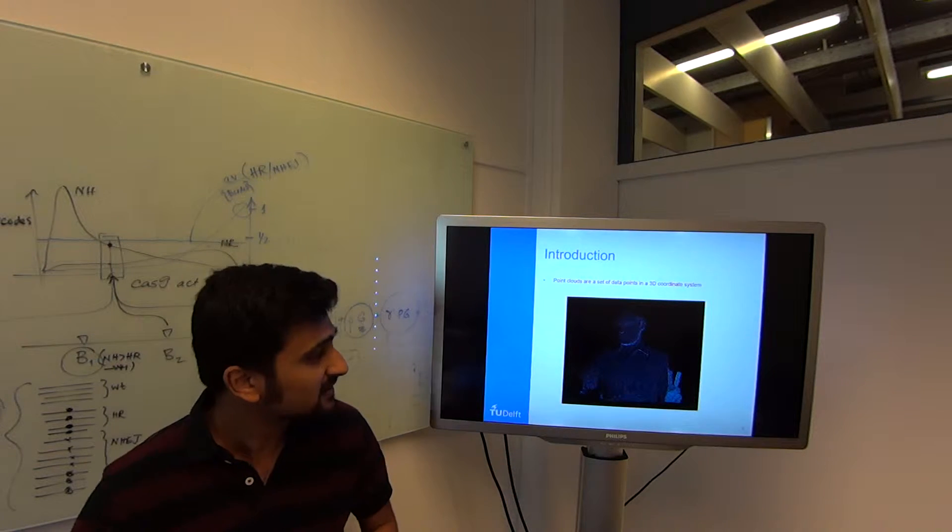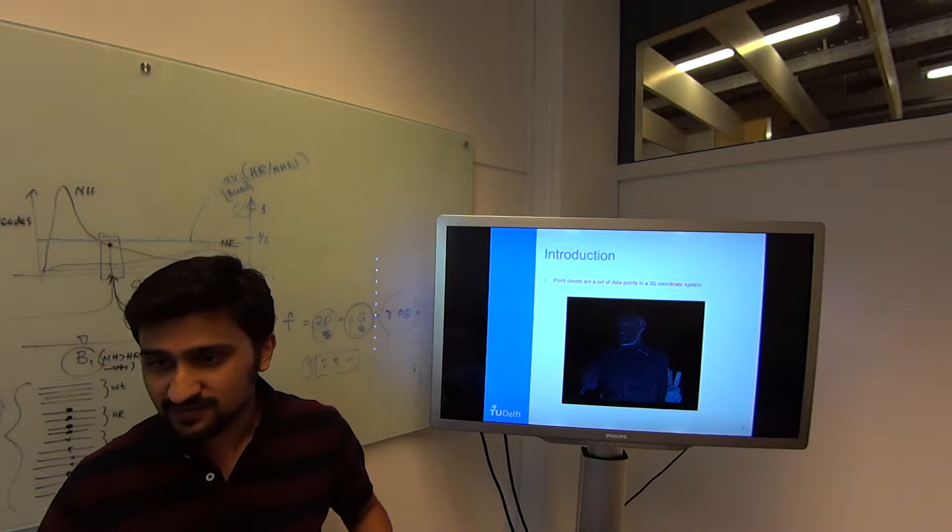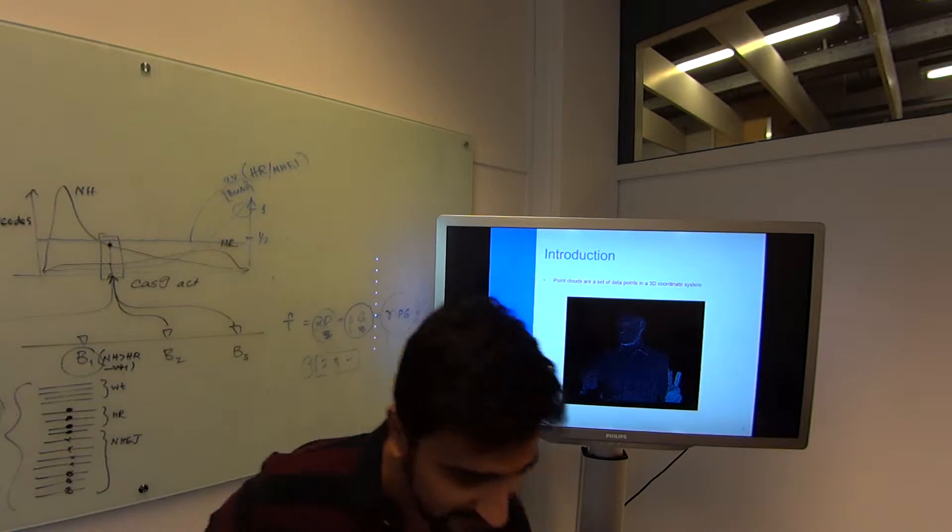Each point has 3 coordinates, the X, Y, Z, and as well as attributes, things like color and illumination intensity.